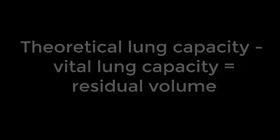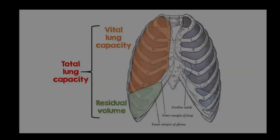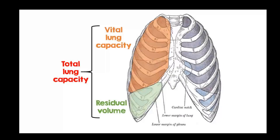You can see how close your value is to that 20% benchmark. If your residual volume is higher than 20%, that means your vital lung capacity is lower than it should be. That could be because you're out of shape, overweight, a smoker, or have asthma — some reason you're not able to exhale as much air as you should be.